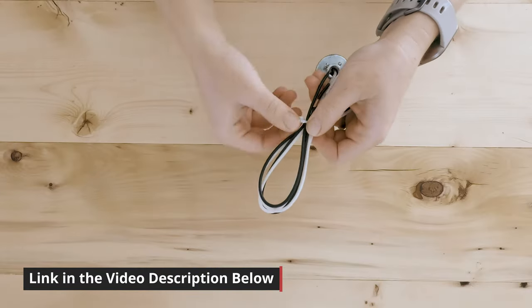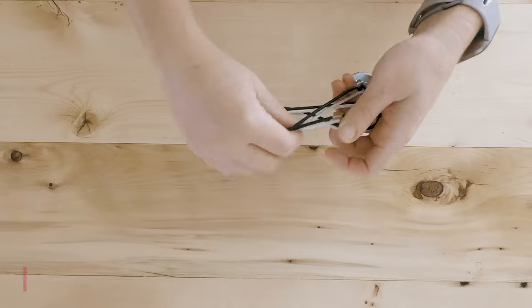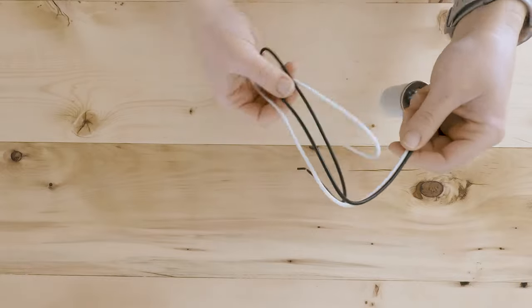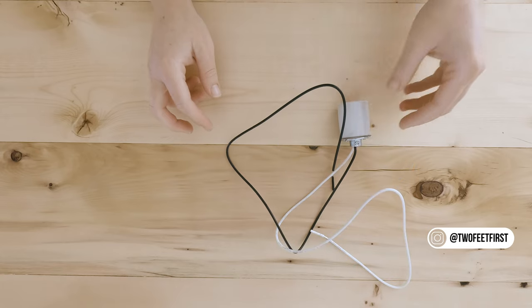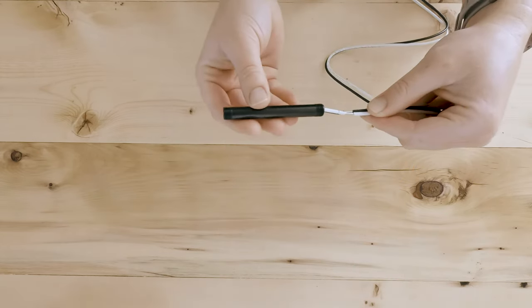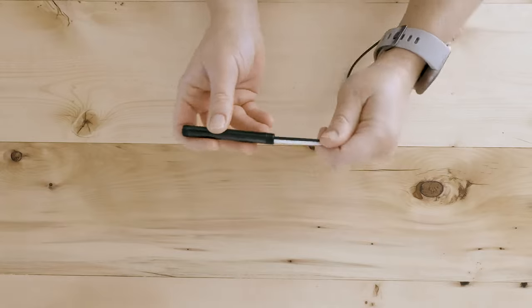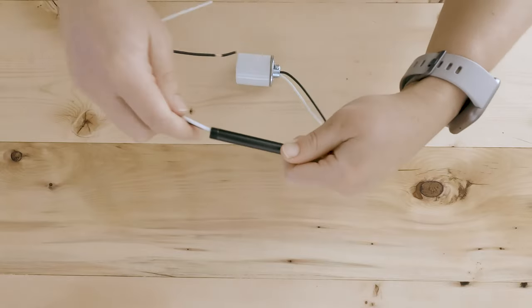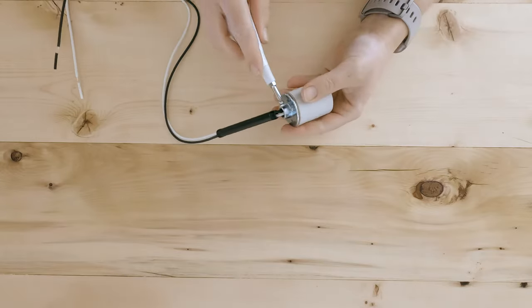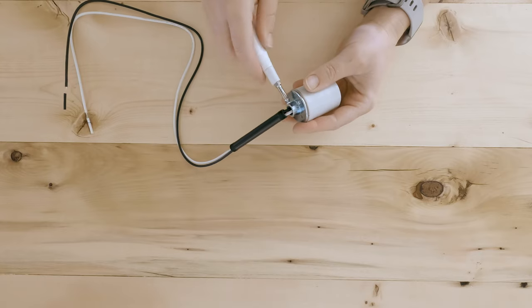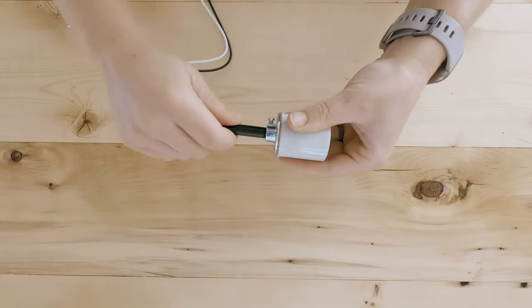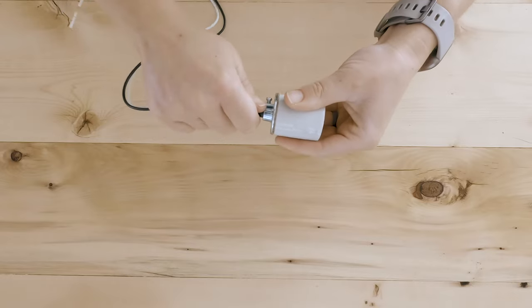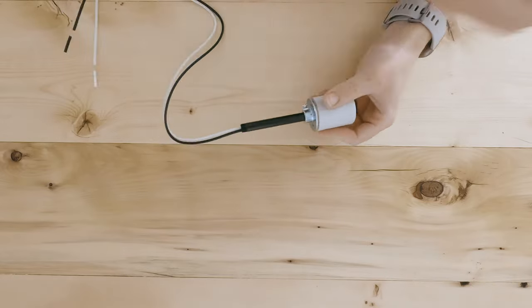Start by unwinding the porcelain light socket wire. Take the 3 inch pipe and feed the wires through the pipe. Unscrew the screw on the light socket to allow you to thread the pipe into the socket. Tighten the pipe onto the socket, then retighten the screw on the light socket.